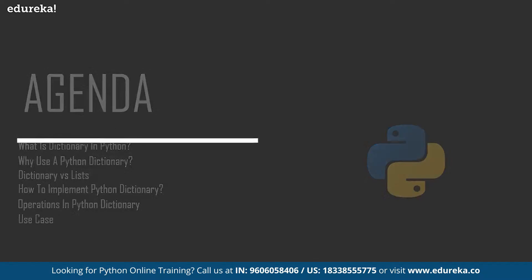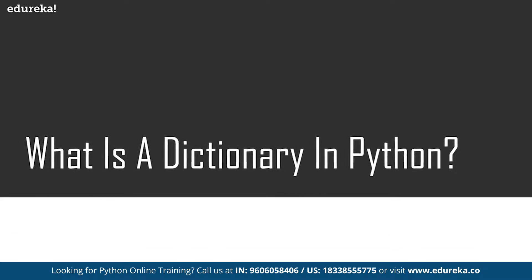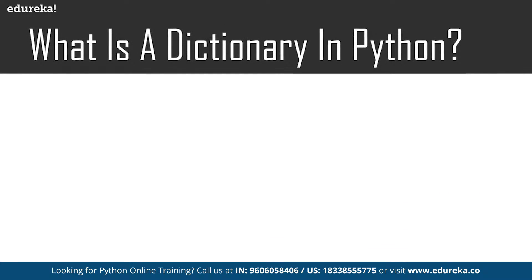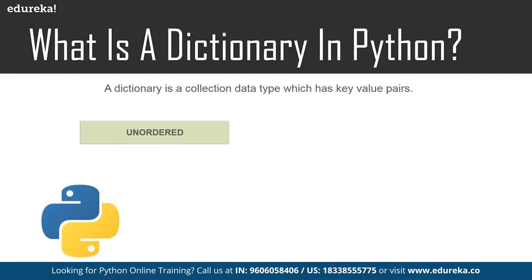Now without any further ado, let's try to understand what is a dictionary in Python. It is a collection data type just like a set or a list, but there are certain features that make dictionary unique. First of all, it is unordered, and we can change values in a dictionary as well since it is mutable.